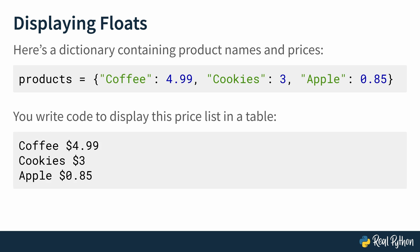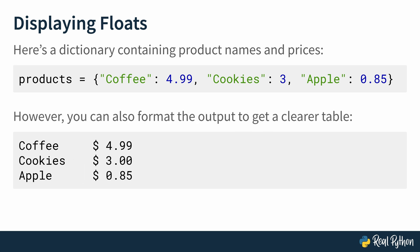Here's another example. There's a dictionary called products with key-value pairs, where the keys are the names of products and the values are their prices. You decide you want to display the price list for this food outlet in a table. The output shows the products and their prices, but it's not displayed in the best possible way. You may want the prices to be aligned, and cookies, which is $3, should show .00 even when it's a whole number. You can modify your code using f-strings to display the table in a neater and clearer fashion, ensuring customers won't get confused.